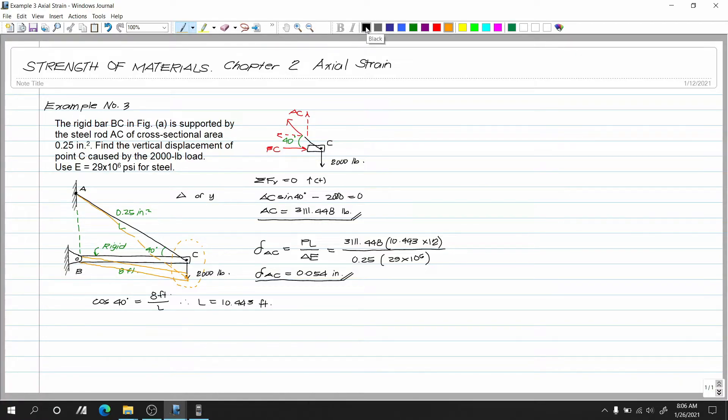So ngayon, ito yung ating original na cable. Ito yung ating point C. Then ito na yung ating na-displace na point C. Sabi natin, C prime. Ayan. So ngayon, ito yung displacement. Ito. Ito yung displacement natin. So sabi natin ito ay YC. Displacement YC. Tapos yung ating cable, nag-elongate yan. Umaba yan eh. Nag-elongate sya na pa ganyan.